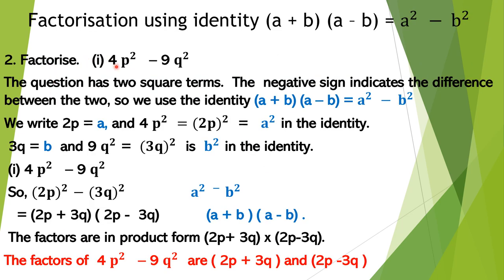Let's factorize 4P² − 9Q². The question has two square terms, and the negative sign indicates the difference between the two. So we will use the identity (A+B)(A−B) = A² − B².